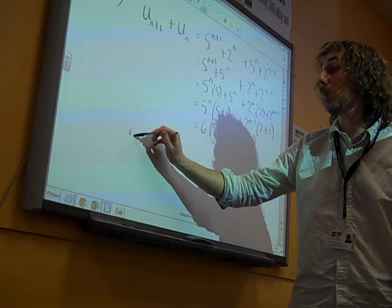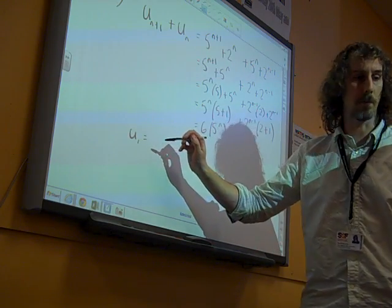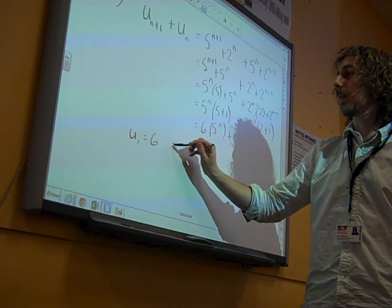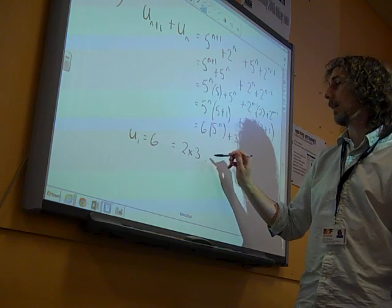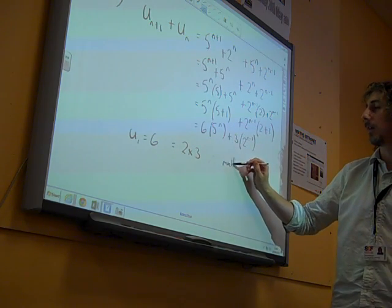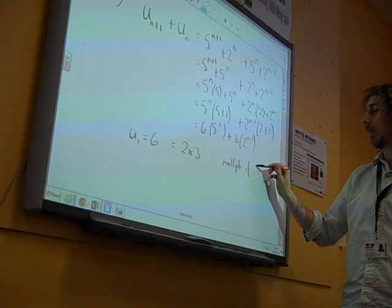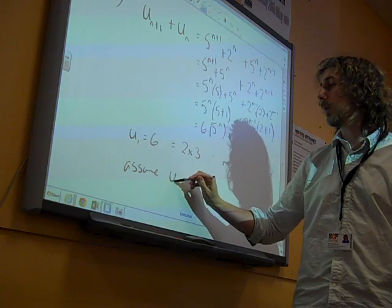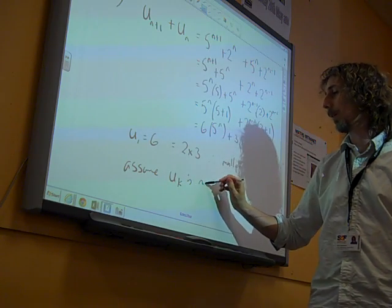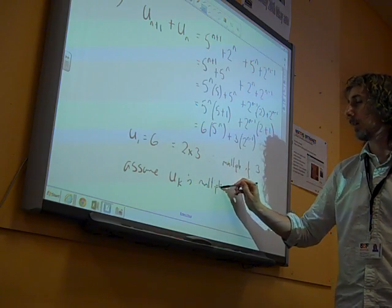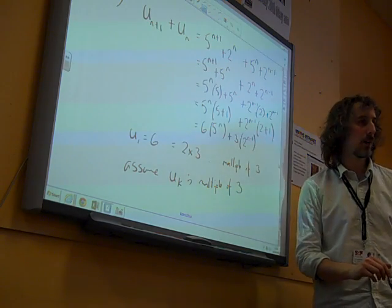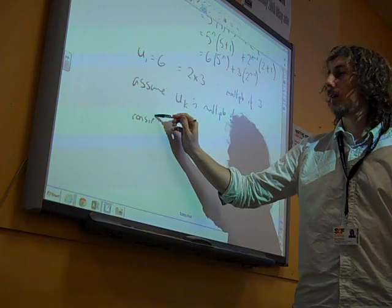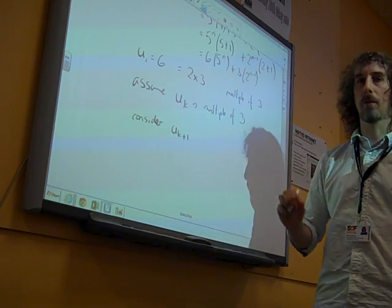Well, I've already actually checked u1, which we got as being 6. So now I'm going to assume that uk is multiple of 3. Now I'm going to consider uk plus 1.